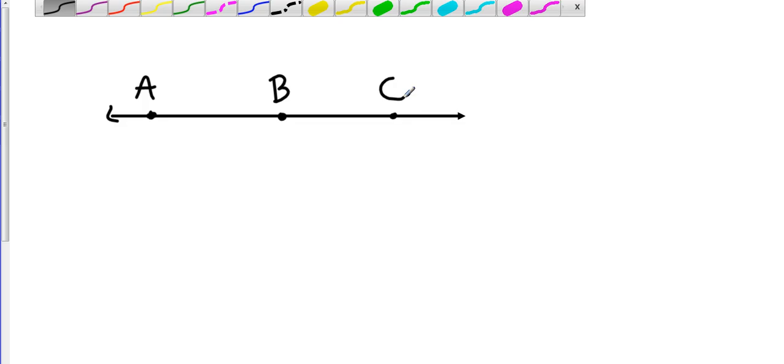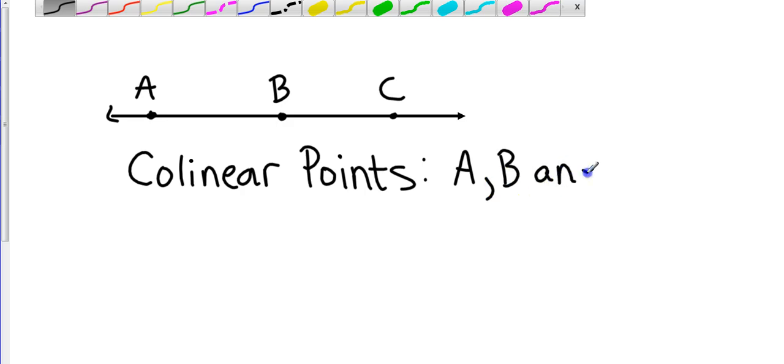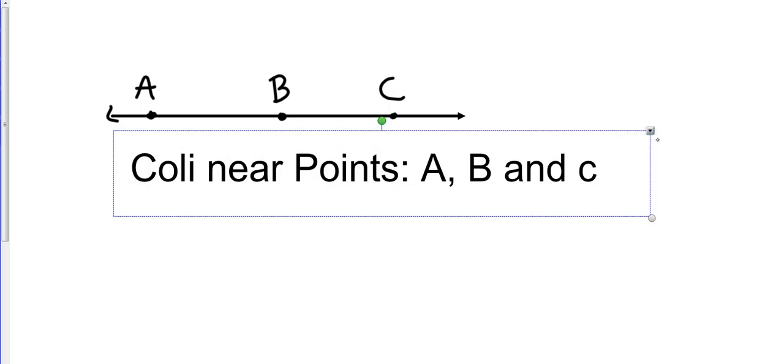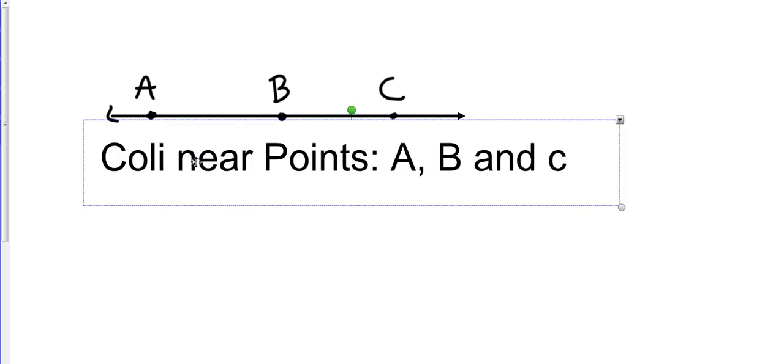Anything that has the same classification is co. For example, if you had co-champions, it would be two champions. This is because it's on a line called colinear. And they are colinear points. Colinear points A, B, and C.